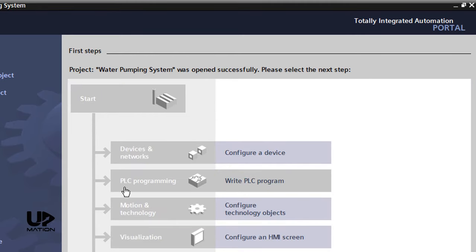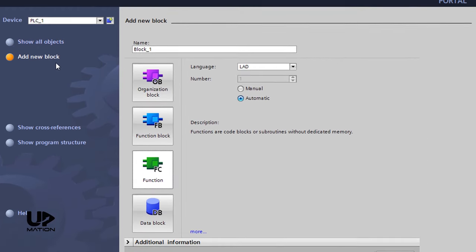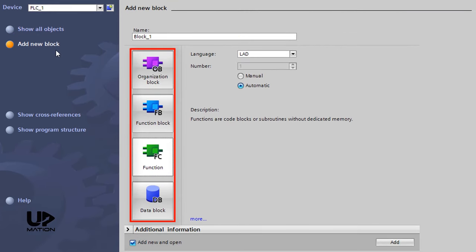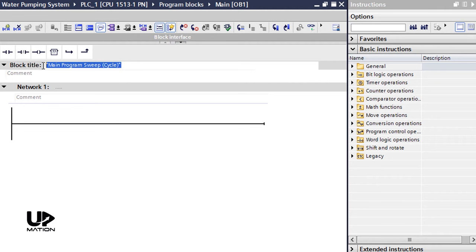In the PLC programming tab, as you see, there is an organization block by default. Depending on the program you are writing, you may need to create other new blocks or functions that you can do from the Add New Block submenu. I will double-click over the main OB or OB1 to open it. OB1 is the primary environment for PLC programming.